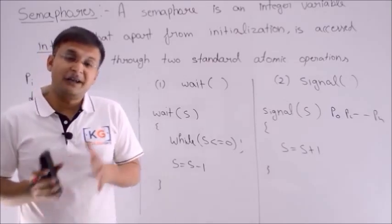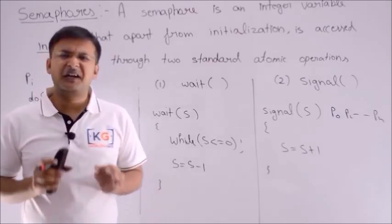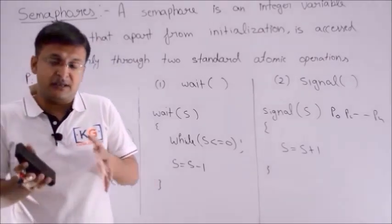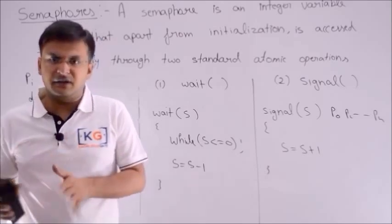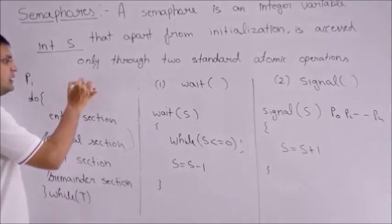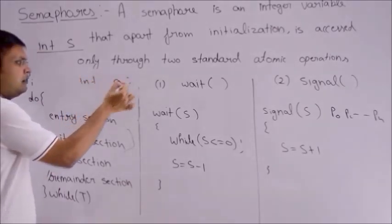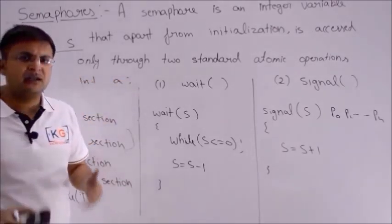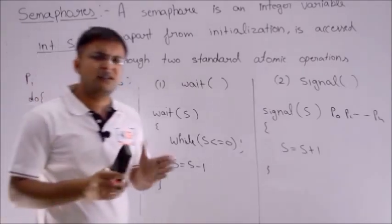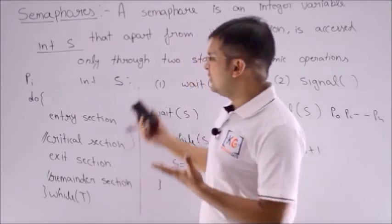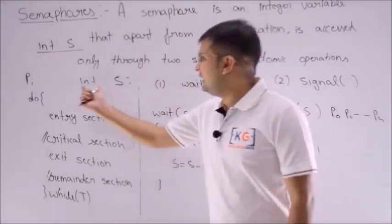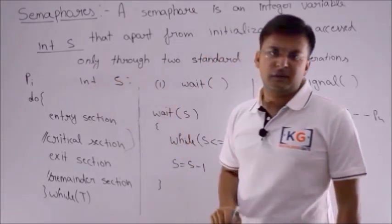Now you understand the beauty of semaphores — they give an n-process solution. Semaphores are simple integer variables. Many people are confused: is it a separate data type or a data structure? The answer is no. As far as simple semaphores are concerned, if you declare any integer — like 'int S' — then you can also call S a semaphore. In general, we call S a semaphore variable. Anything — A, B, C, D — could be a semaphore.